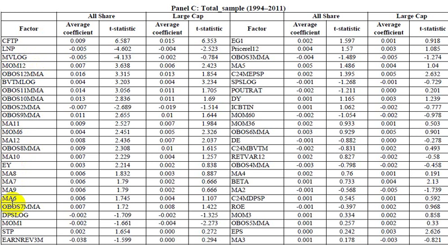Using each of these factors, they created a regression to see what the coefficient on each particular factor was. They also have T-statistics so we can see which ones are significant. They're sorted by T-statistics so the top ones are most significant — the threshold is probably around two, starting with earnings yield and going up.